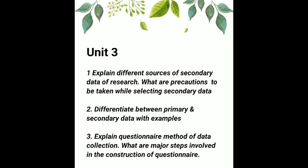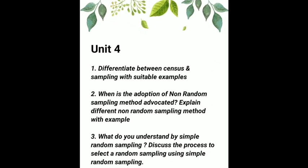Unit 4 important questions. First: Differentiate between census and sampling with suitable examples. Question number two: When is the adoption of a non-random sampling method advocated? Interlinked question: Explain different non-random sampling methods with examples. Question number three: What do you understand by simple random sampling? Interlinked question: Discuss the process to select a sample using simple random sampling.